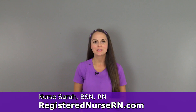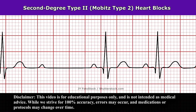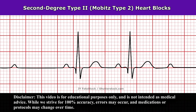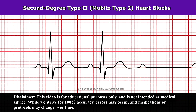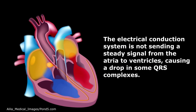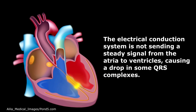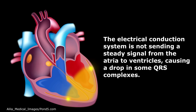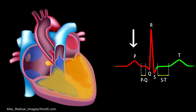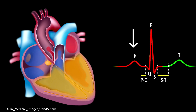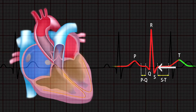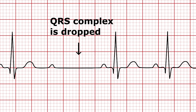As a nurse you want to be familiar with heart blocks, and in this review I'm going to be talking about second-degree type 2 heart blocks, sometimes referred to as Mobitz type 2. The reason this rhythm occurs is because the electrical conduction system is not sending a steady signal from the atria to the ventricles. Normally that produces a P wave followed by a QRS complex, but because the signal is not steady, we're going to lose that QRS complex.